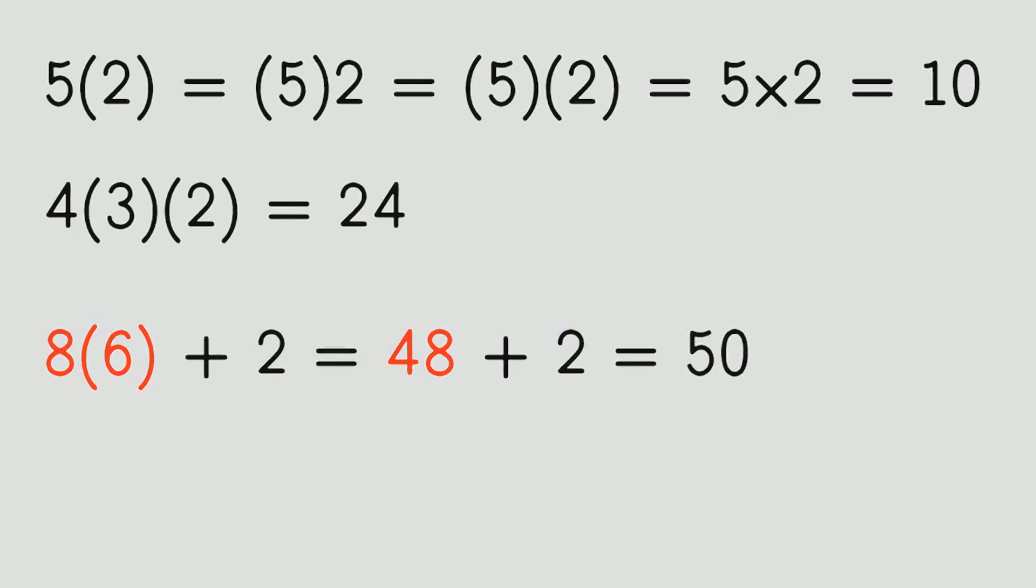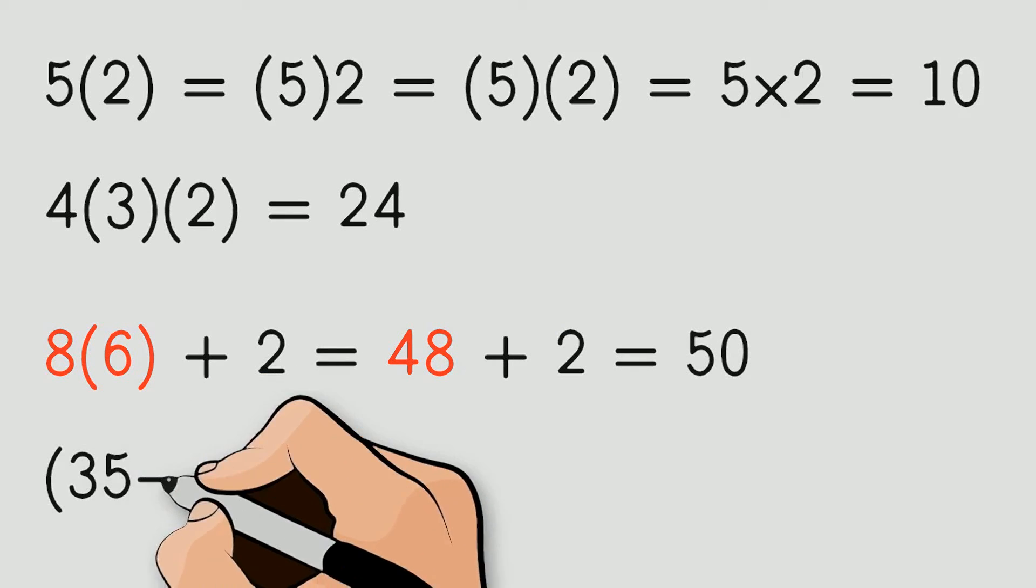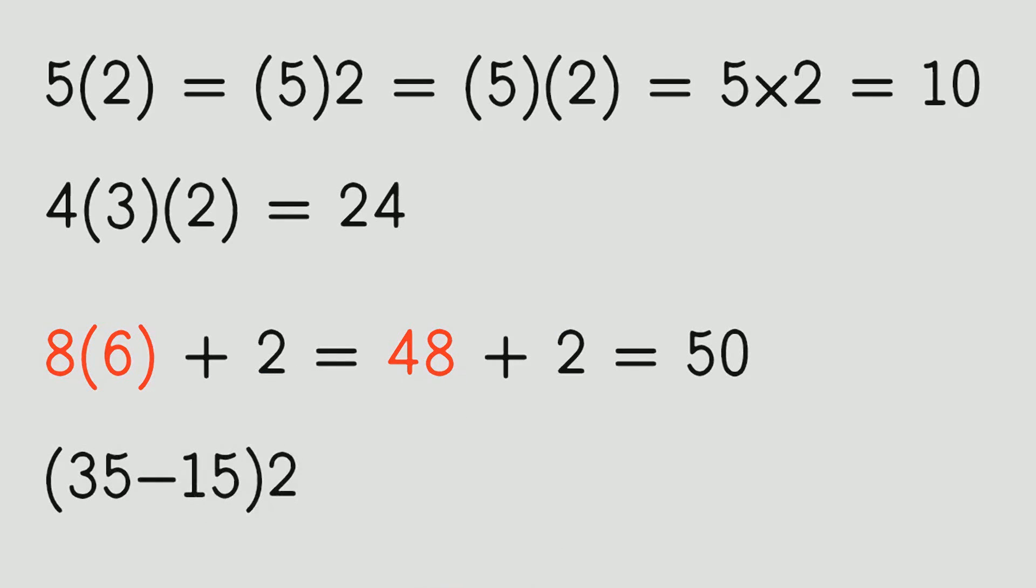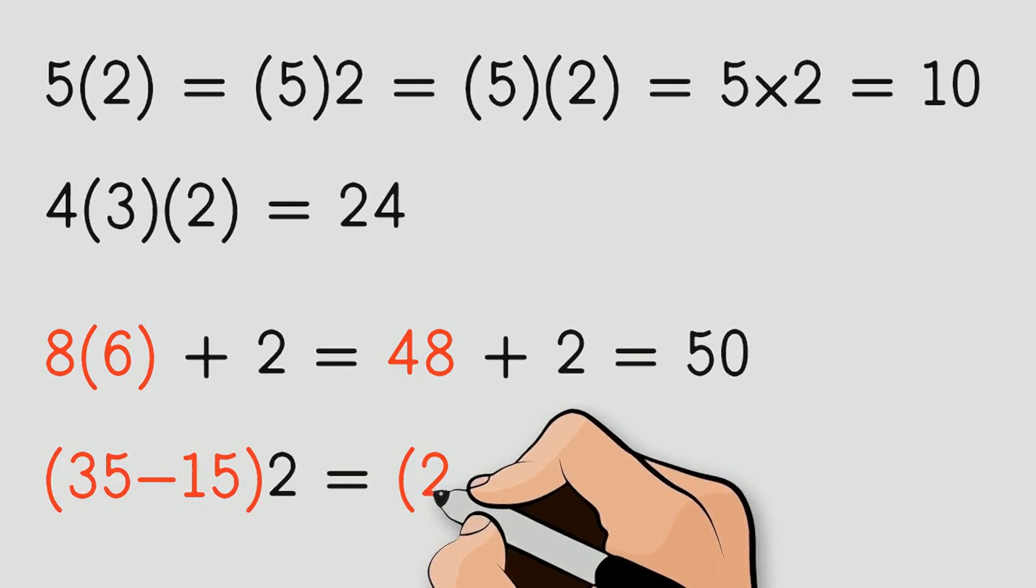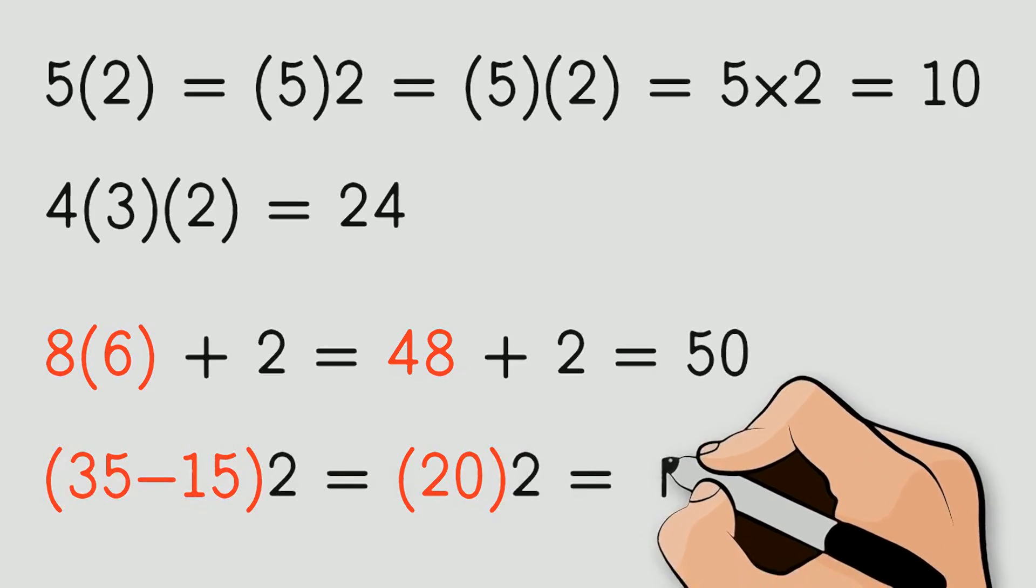Let's look at another example. How can I solve this problem? You are right. I have to subtract 35 minus 15, which is 20, and then I multiply, 20 times 2, which is 40.